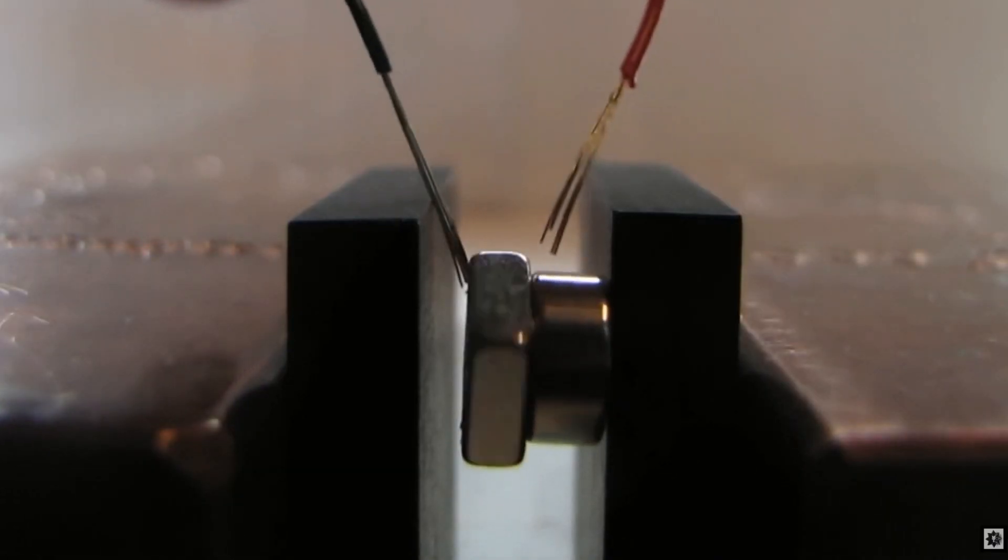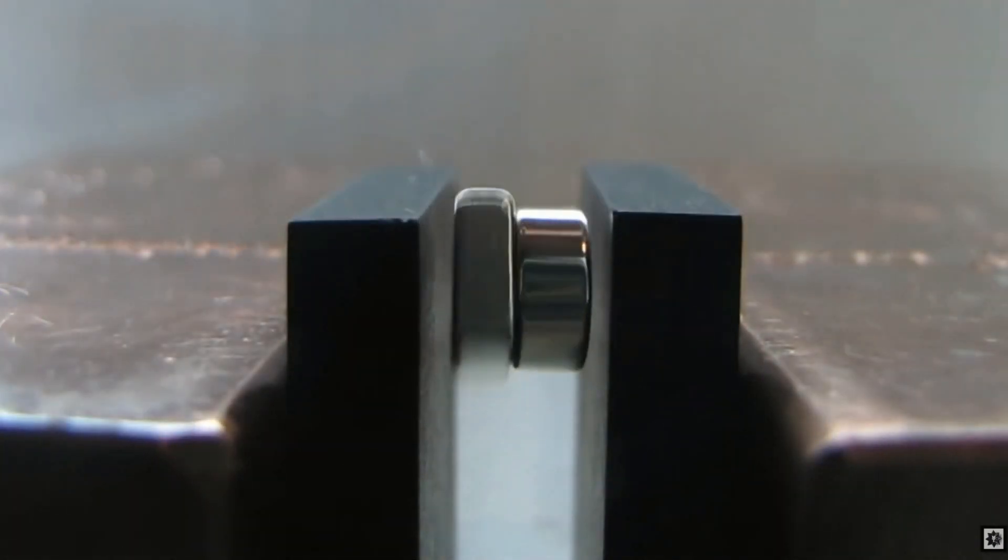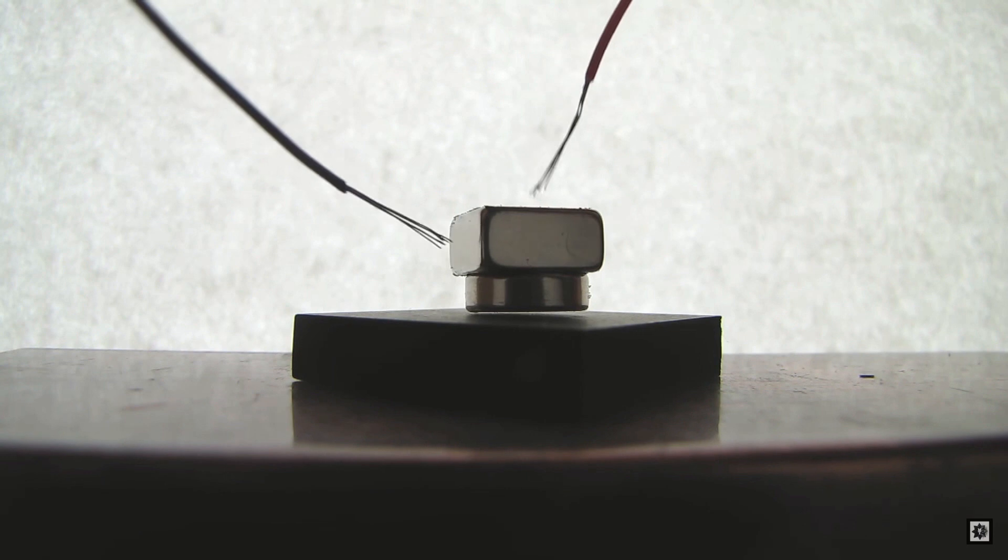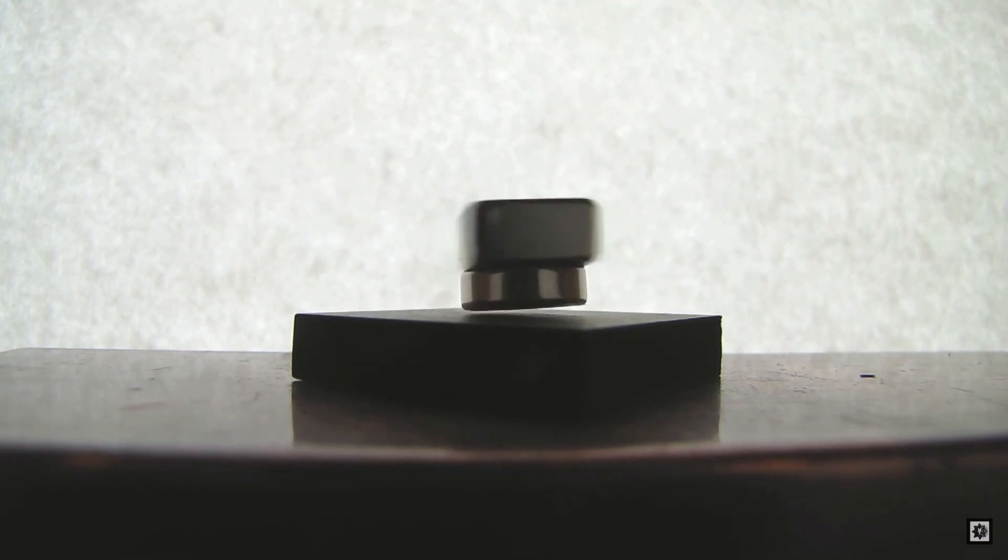Once a magnet is levitating, it is quite easy to make it spin with a battery and a couple of wires. A regular AA battery will do the trick easily.